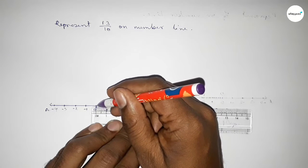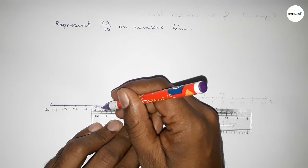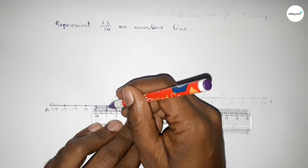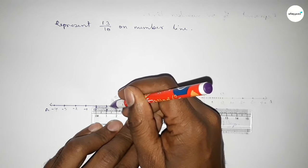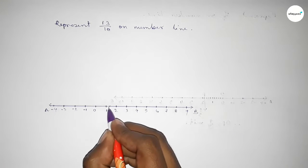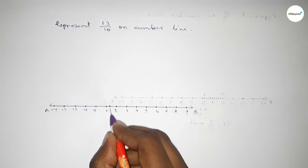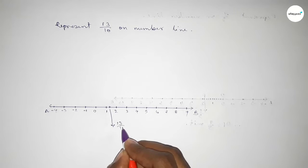After 1: this is 1.1, 1.2, and this is 1.3, or 13 over 10. So this is 13 over 10, or 1.3 unit. Labeling this as O and P, therefore OP equals 13 over 10 unit.